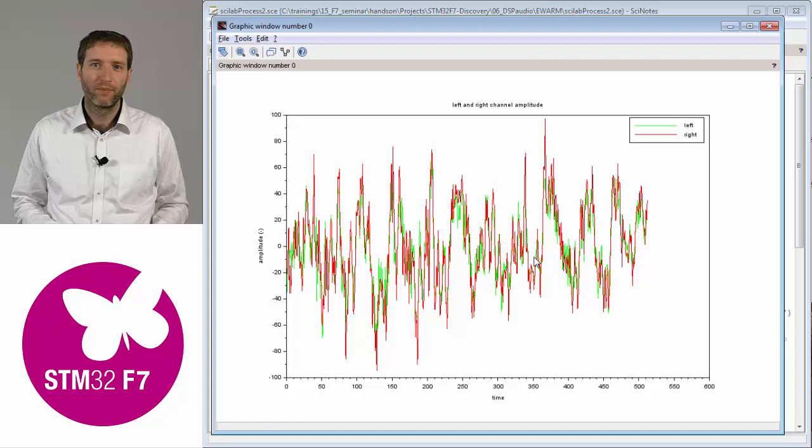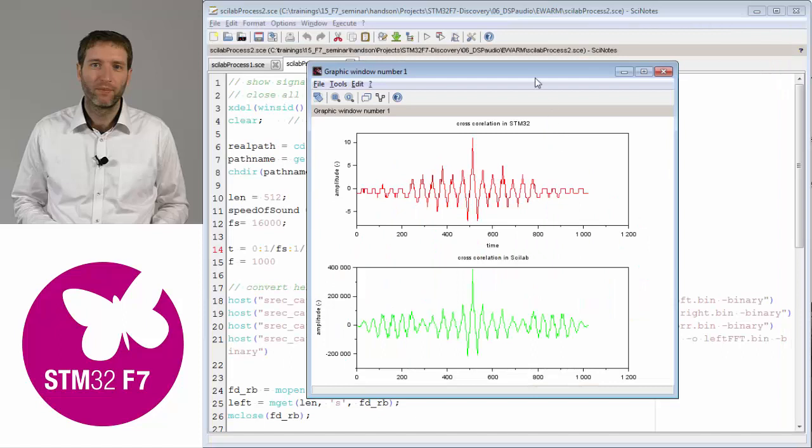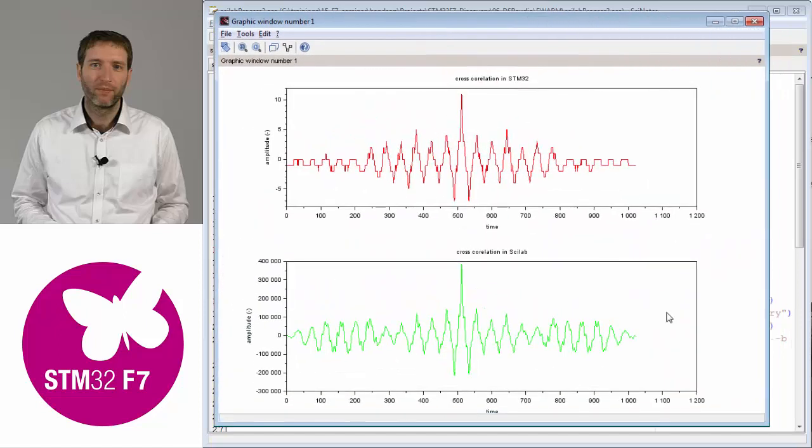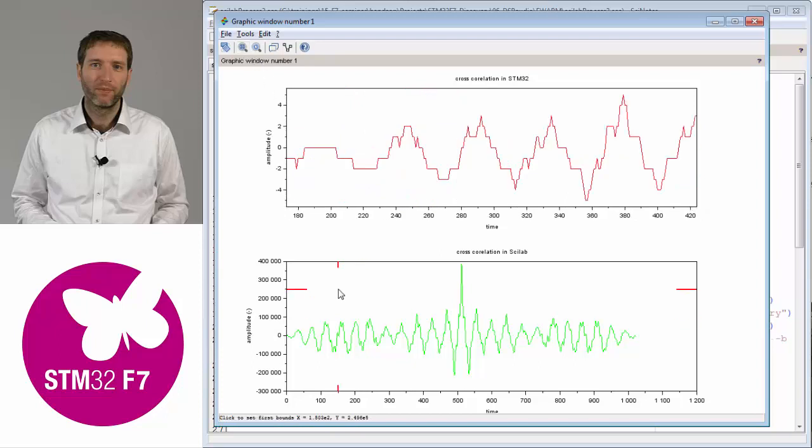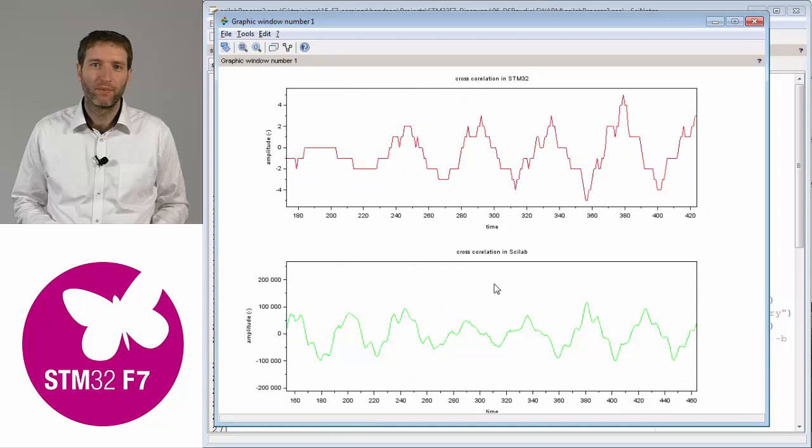If we multiply small numbers, we get even smaller numbers. So the cross correlation function will look like this—we hardly reach 10 in amplitude. Here we can demonstrate very nicely the limit of the fixed point. The result is pretty poor compared to what you get if you compute with never-ending numbers in PC. Even from small numbers, you can get quite nice results if you don't truncate all the time.